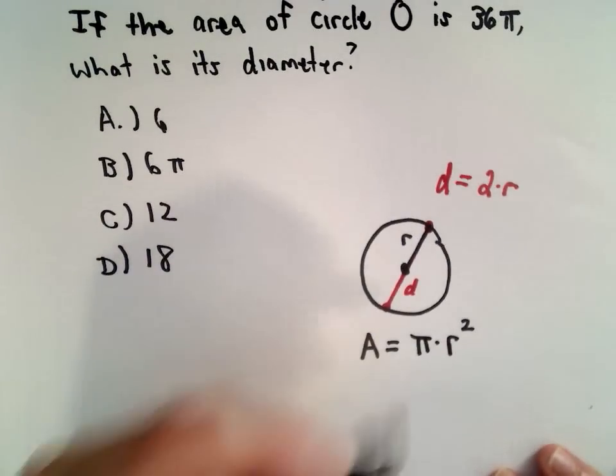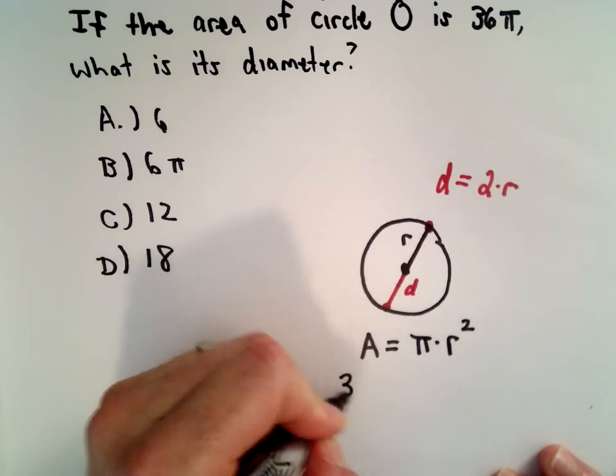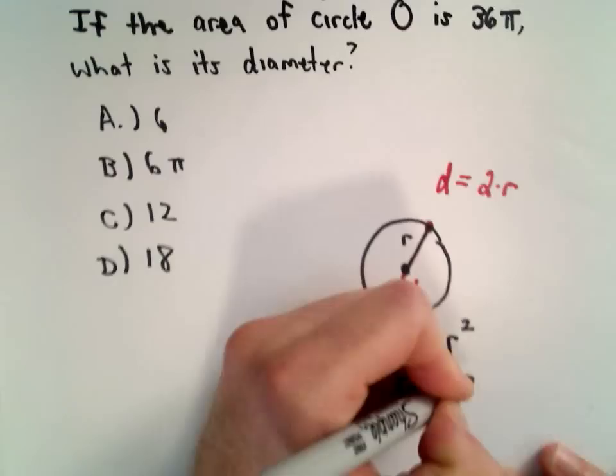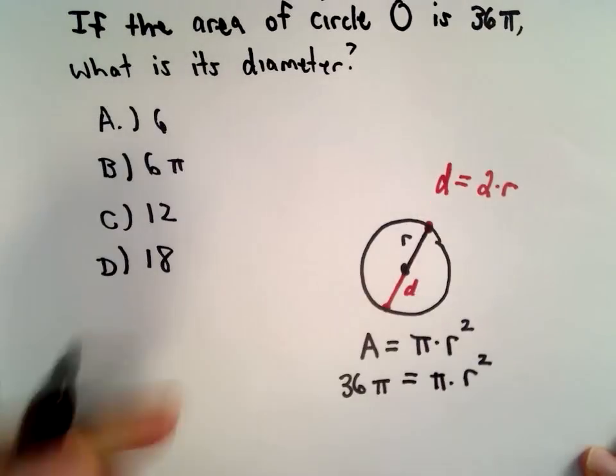Alrighty, so the area goes on the left—that's 36π—and that equals π multiplied by r².